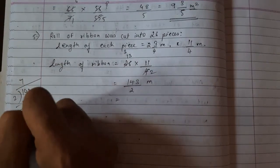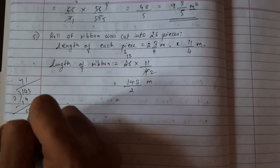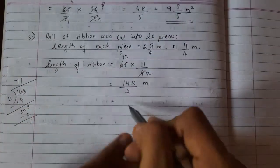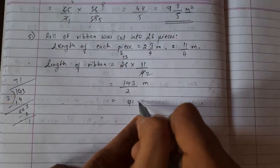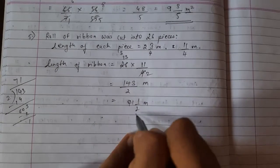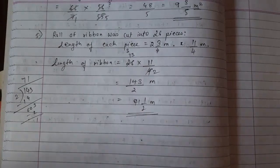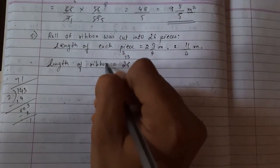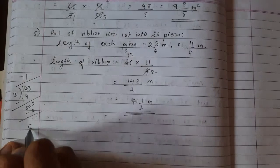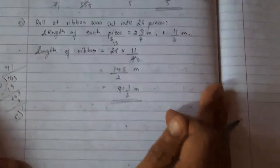2 sevens are... 71, 1 upon 2 meters was the length of original ribbon. See how much simple question it is. Let us do next sum. We will not waste the time.